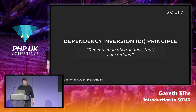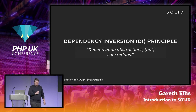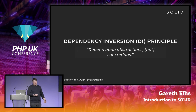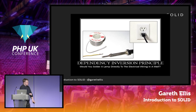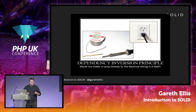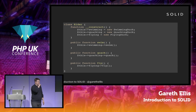The final SOLID principle, the D, is Dependency Inversion. The Dependency Inversion Principle states that we should depend on abstractions, not concretions. Most of you have heard of dependency injection — dependency inversion is what we're trying to address when we use it. We've seen several examples of dependencies throughout this talk.